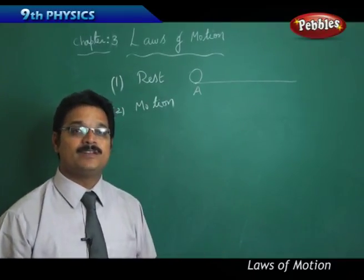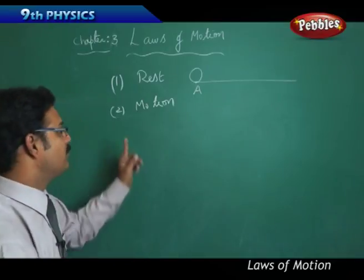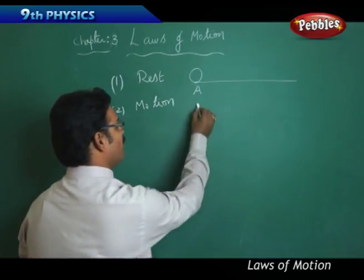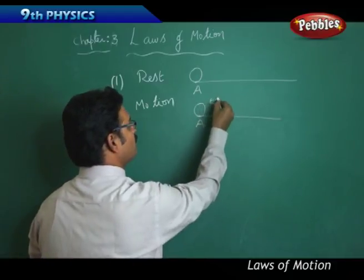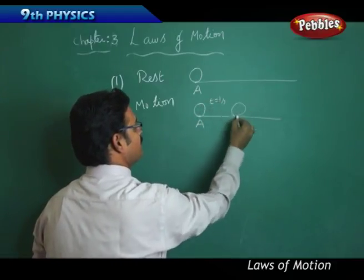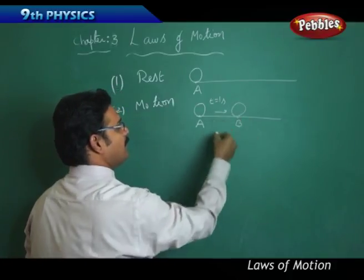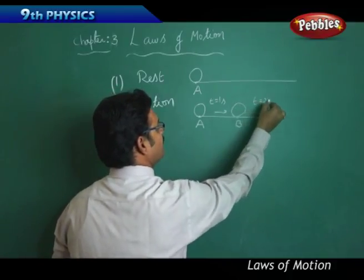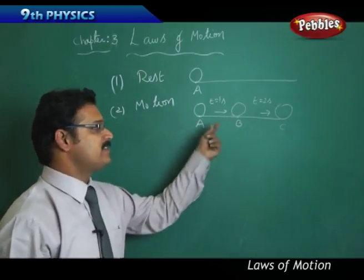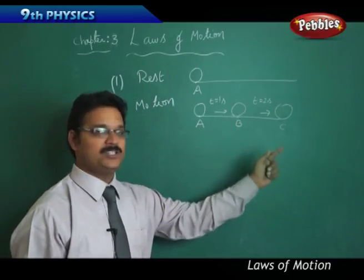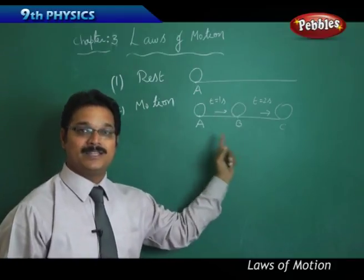If the location is changing with respect to time, it is called motion. Say the same ball: initially it is at A, after t = 1 second it is at B, and after t = 2 seconds the ball is at C. For different timings, the ball is changing its location from A to B to C, then we say the ball is in motion.